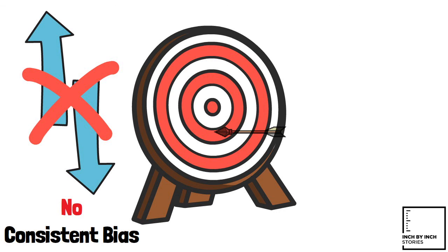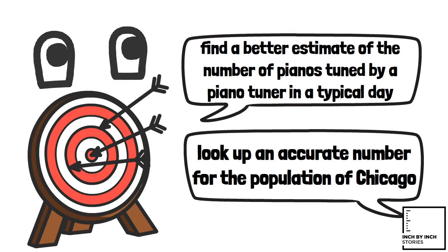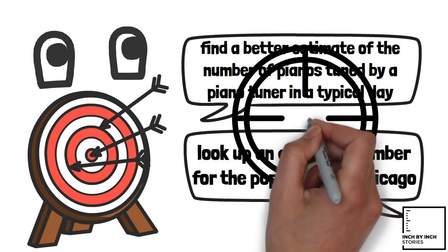A Fermi calculation that involves the manipulation of several estimated factors, such as the number of piano tuners in Chicago, will probably be more accurate than might be first supposed.